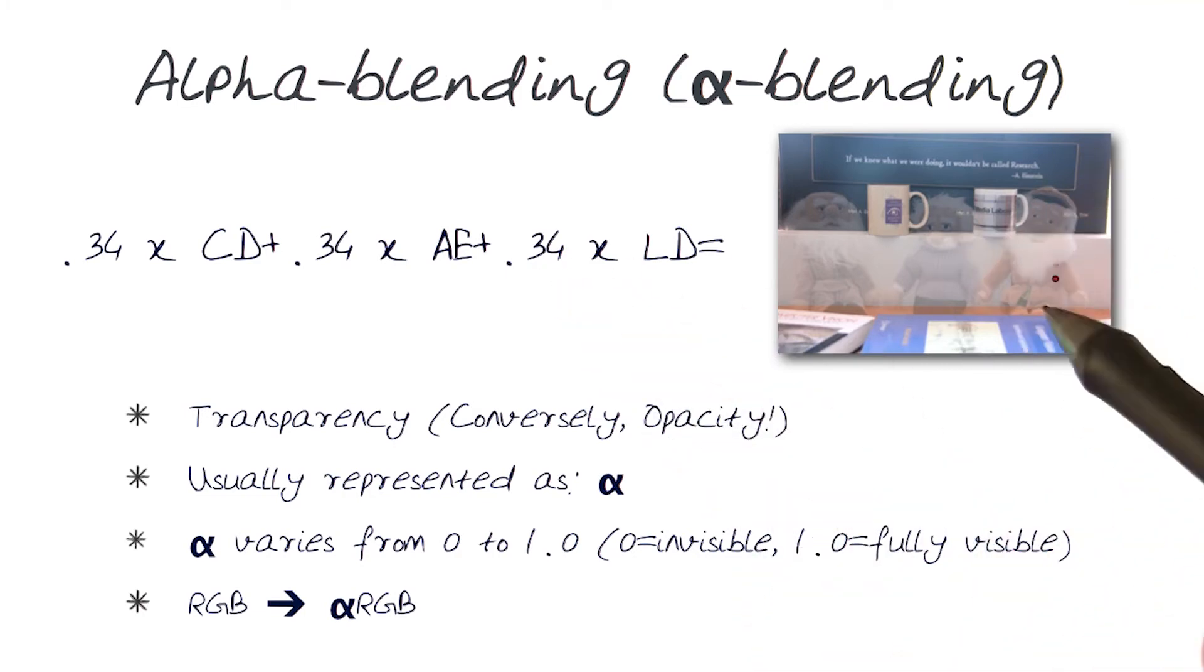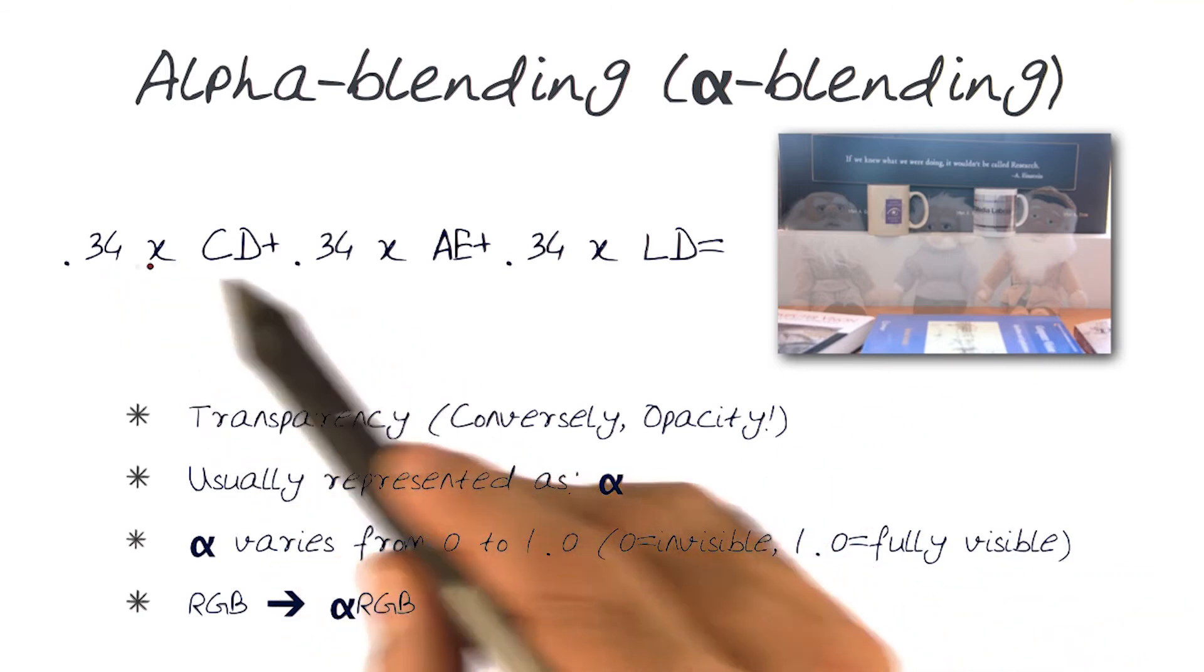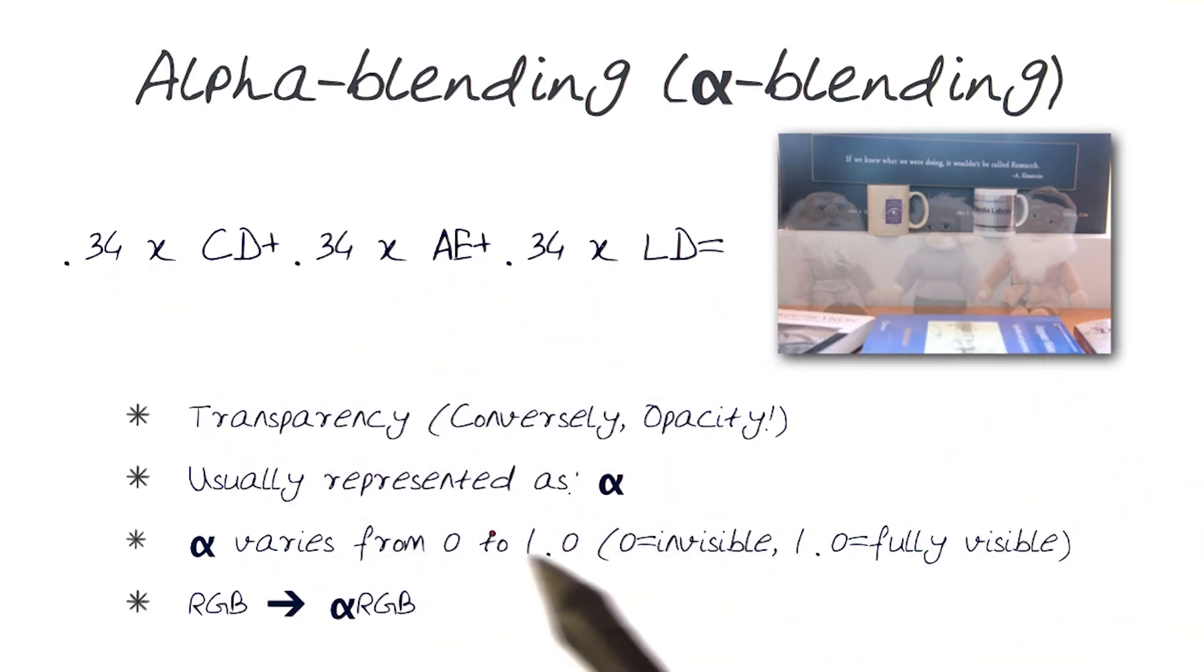Of course, it would have changed the dynamic range of the pixel values here, but Mr. Da Vinci would have been perfectly visible. Similarly, you could play around with these numbers for all of them. So alpha varies from 0 to 1, where 0 is invisible and 1 is fully visible.